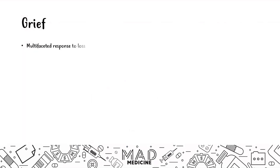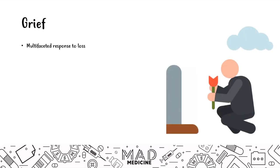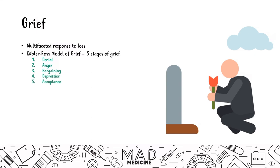Grief is a multifaceted response to loss in general, and this can happen from many different causes. It could be due to loss of a loved one, a partner, or even a pet or something they hold dear. There is a model of grief called the Kubler-Ross model, where there are five main stages: denial, anger, bargaining — whether with a higher being or themselves — then depression, and finally acceptance of their loss.